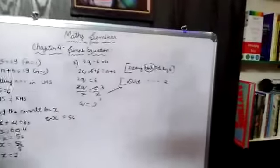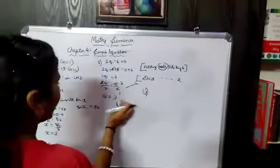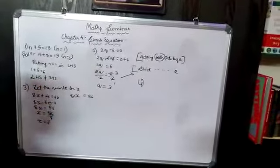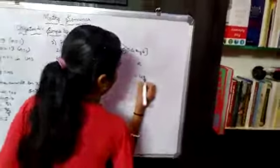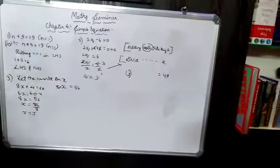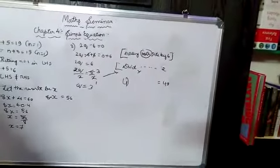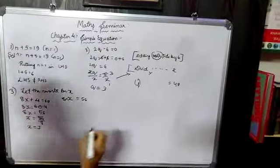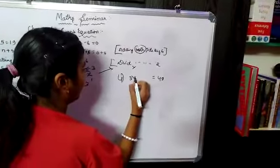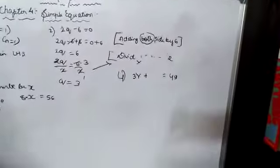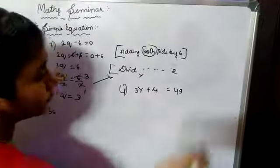Now the 4th sum. Lakshmi's father is 49 years old. He is 4 years older than 3 times Lakshmi's age. Let Lakshmi's age be Y. So 3 times Y plus 4 equals 49: the equation is 3Y plus 4 equal to 49.